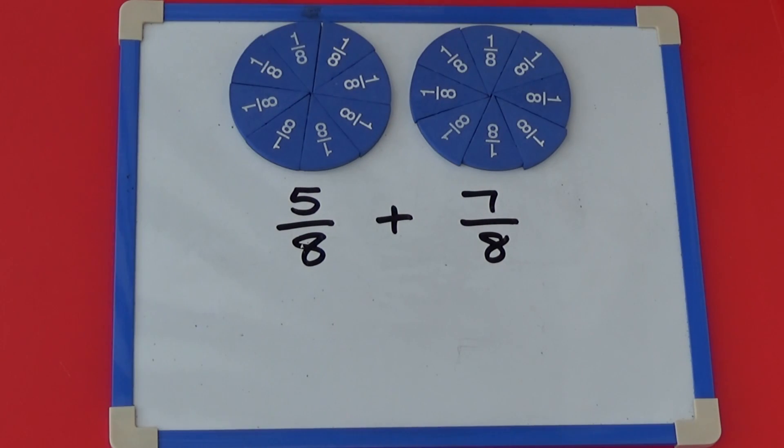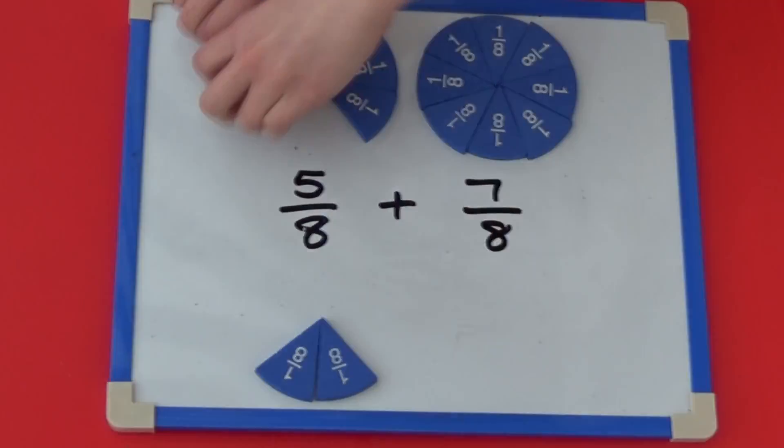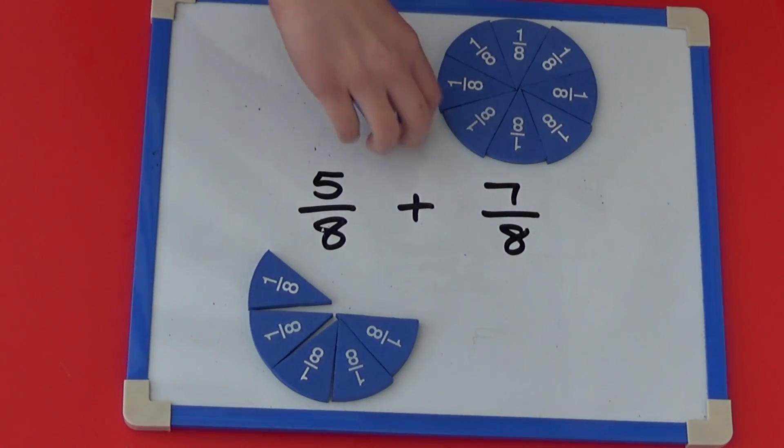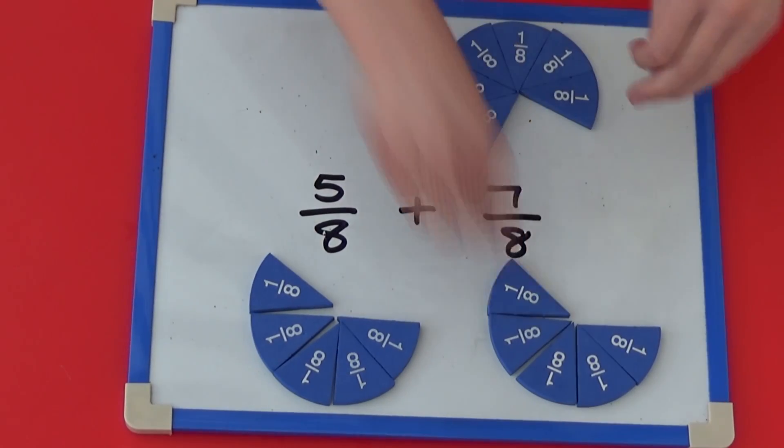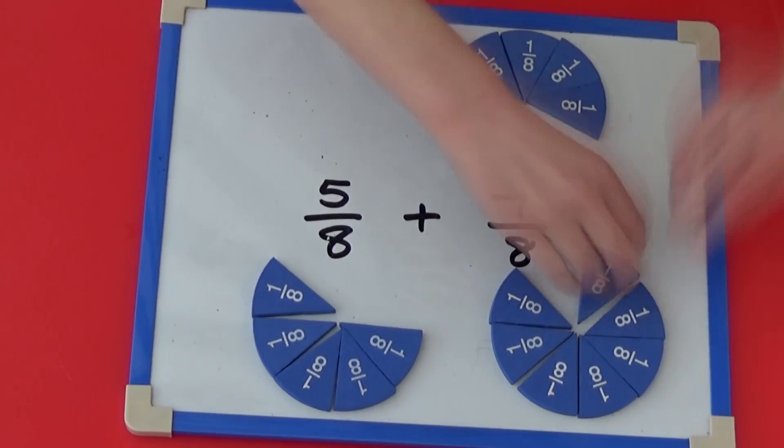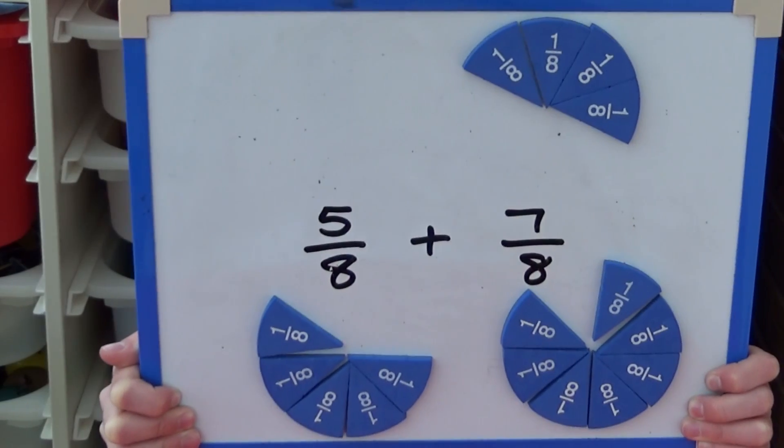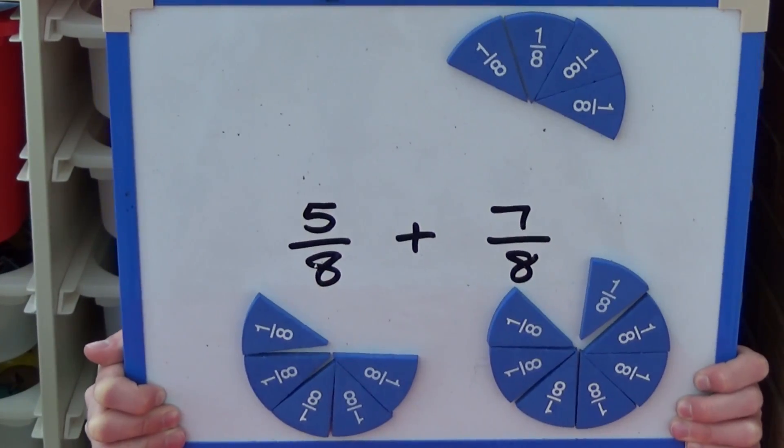We need to add together the five eighths and the seven eighths. So all together that gives us twelve eighths. We can see that all the eighths are going to add up to more than one whole.